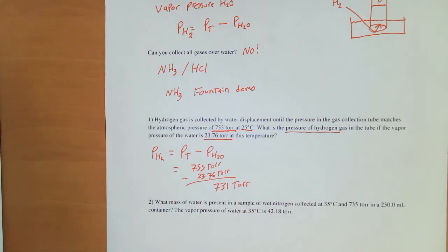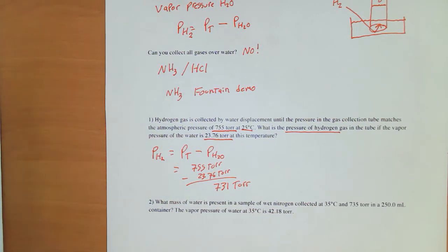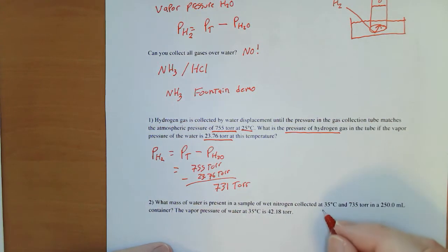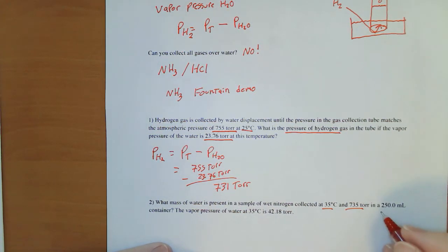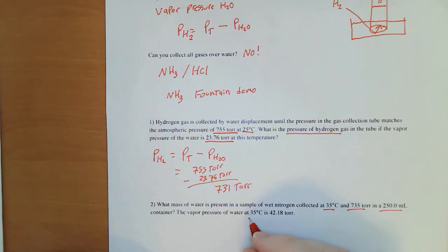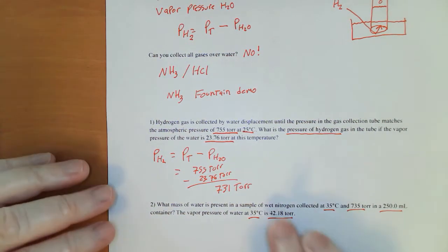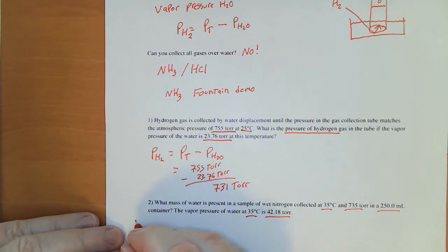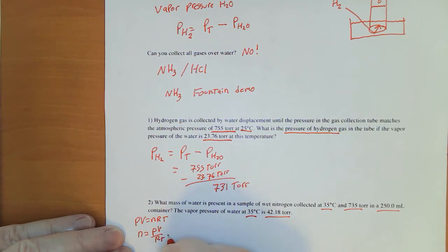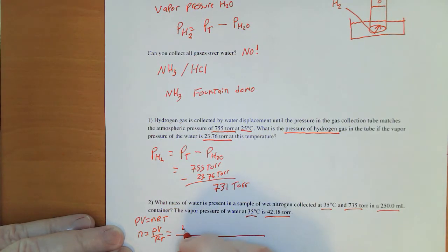Now maybe we want to go into something just slightly more complicated. What mass of water is present in a sample of wet nitrogen collected at 35 degrees, 735 torr, in a 250 milliliter container? The vapor pressure of water at 35 degrees is 42.18. All I'm concerned with is the water. I can just forget about the fact that there's nitrogen in there. So if PV equals nRT, n equals PV over RT. And the pressure of the water is 42.18 torr. That's the vapor pressure of the water.